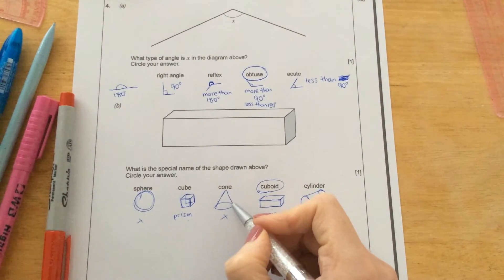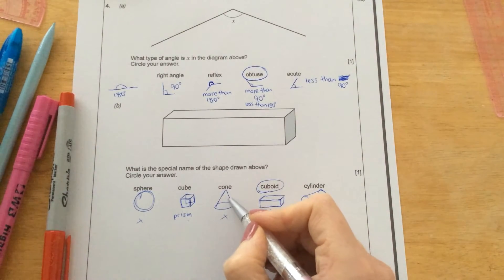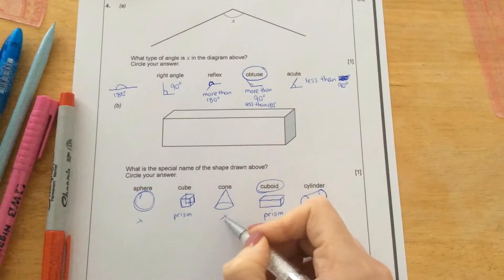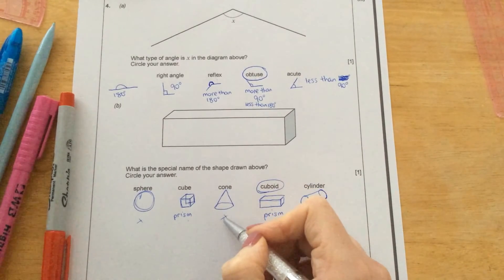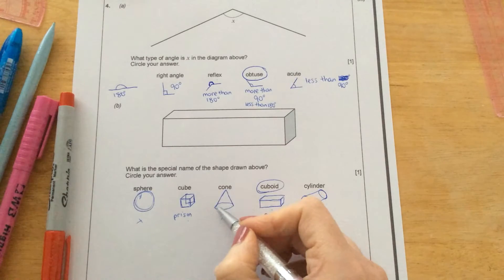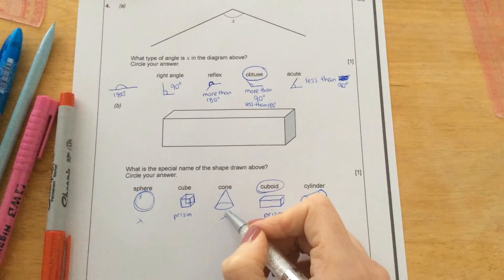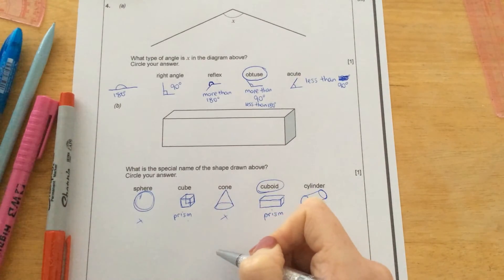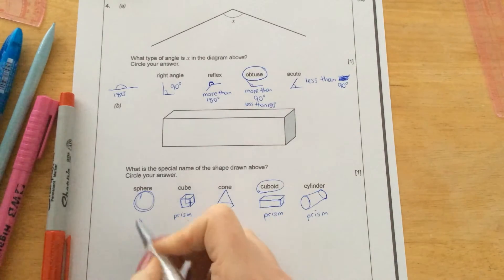A cone is a circle that's been stretched into a point. So that is not a prism, because it doesn't have the same face on either end. But it is a 3D shape, because it's three dimensions.